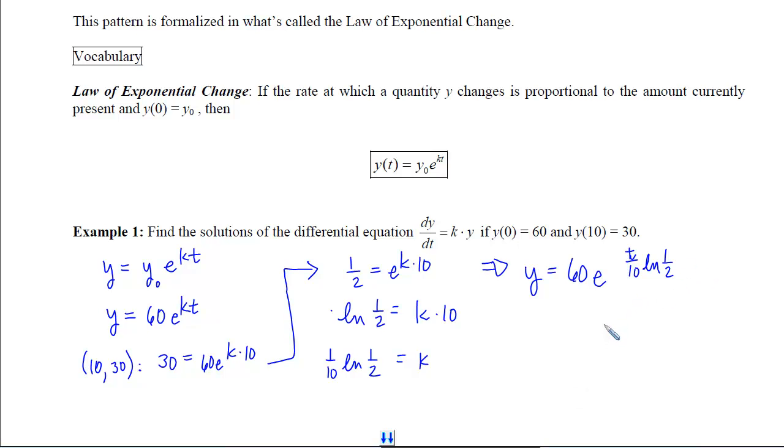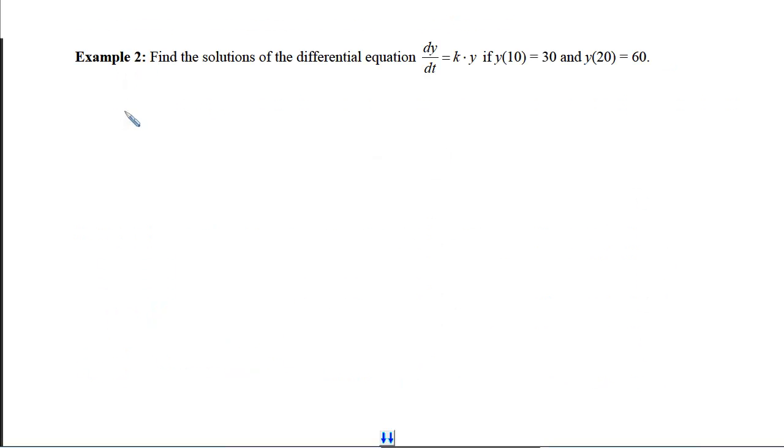With our second example, it's a little more tricky. We again have that law of exponential change, so we know the solutions will be of this form. But this time we didn't get y(0), so we're actually going to have a system of equations. We know that we get 30 when we plug 10 in, and we know that we get 60 when we plug 20 in.